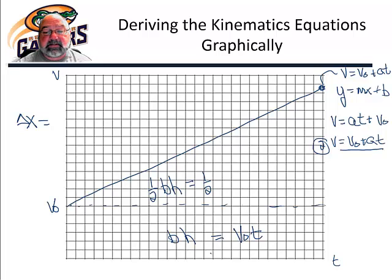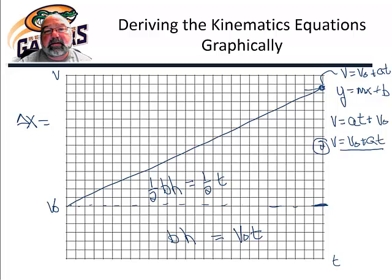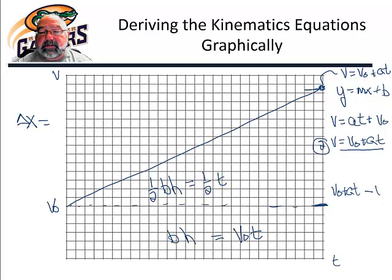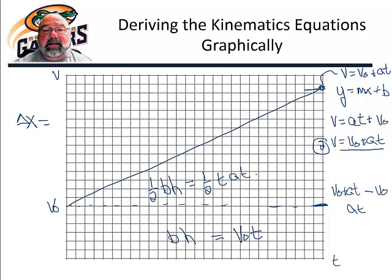Now for the triangle: the area of a triangle is one half base times height. Our base is time, and our height is the value at the top point minus the initial value — that is, (v₀ + at) minus v₀, which simplifies down to a times t. So I plug in a times t and collect terms, giving us one half acceleration times t squared.